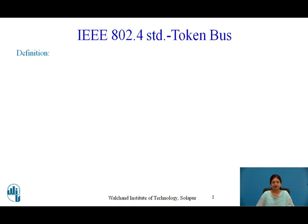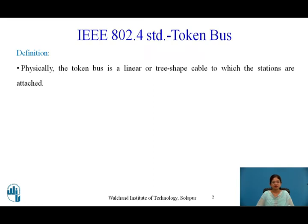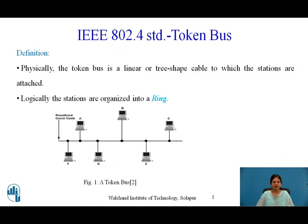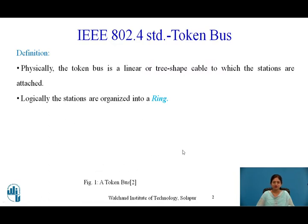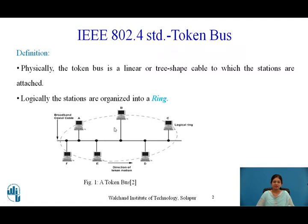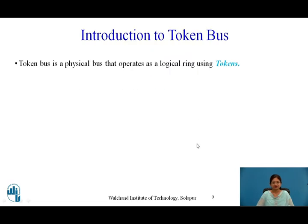Let's start with the introduction of Token Bus. Physically, the Token Bus is a linear or tree-shaped cable to which stations are attached, but logically the stations are organized into a ring. In this diagram, stations are connected with coaxial cable — specifically broadband coaxial cable — but all these stations are logically connected with each other like a ring, with stations A, B, C, D, E, and F logically connected.